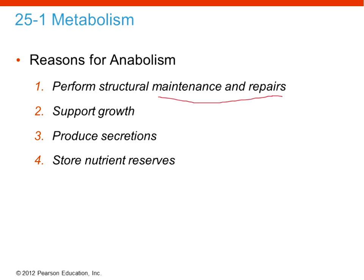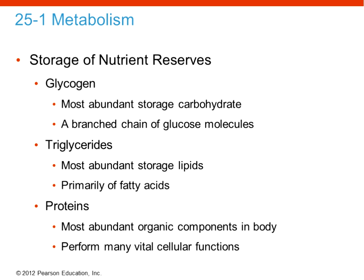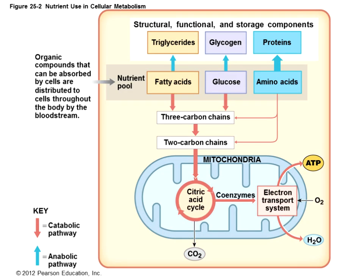The reasons for anabolism include maintenance and repair, supporting growth, secretory products, and storage of nutrient reserves. For example, skeletal muscle can take excess sugar and store it as glycogen — an anabolic pathway — rather than using it to produce ATP. Storage forms include glycogen for sugar, triglycerides for fat, and proteins, which are the most abundant component in the body and contribute to many cellular functions.